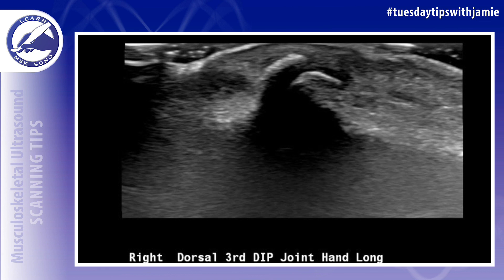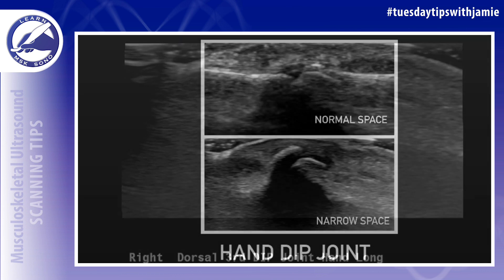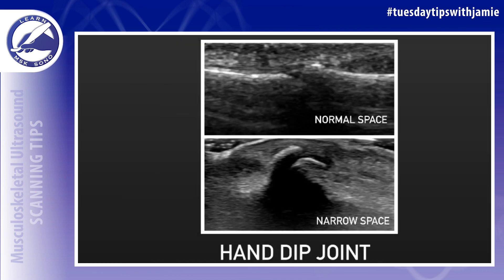The next example is further distal in the fingers. This is at the DIP joint. And now you'll see the side-by-side comparison of the normal joint space on top versus the joint space narrowing of the DIP joint on the bottom.